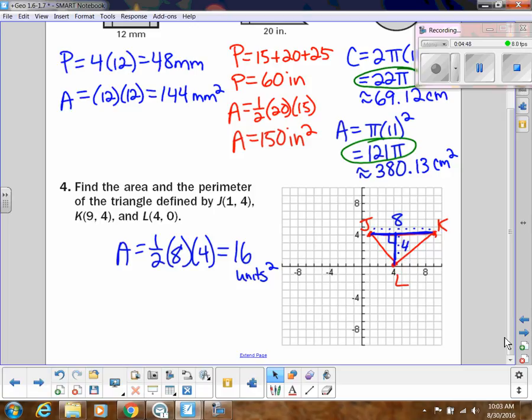Now for perimeter, we know that JK is 8, but we would need to know LK and then JL. So you can either use distance formula or Pythagorean theorem. I'm probably going to use Pythagorean theorem since I've already graphed it.